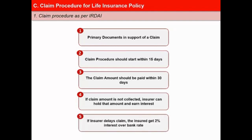Where there is a delay on the part of the insurer in processing a claim for a reason other than the one covered by sub-regulation 4, the life insurance company shall pay interest on the claim amount at a rate which is 2% above the bank rate prevalent at the beginning of the financial year in which the claim is reviewed.